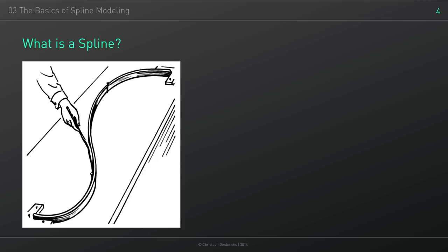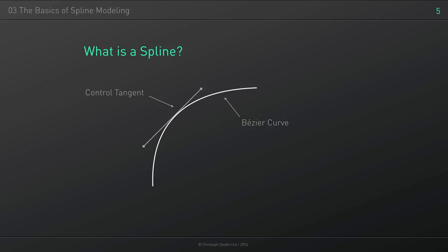But what actually is a spline? We have to go back in time to the era where we had no computer-aided design software or no computers at all. Architects and draftsmen back then had to use something called a spline to draw mathematically accurate curves. They used something like a bendable ruler to draw their curves on paper or their architectural sheets.